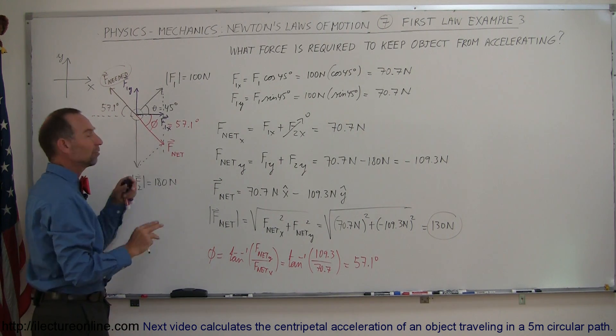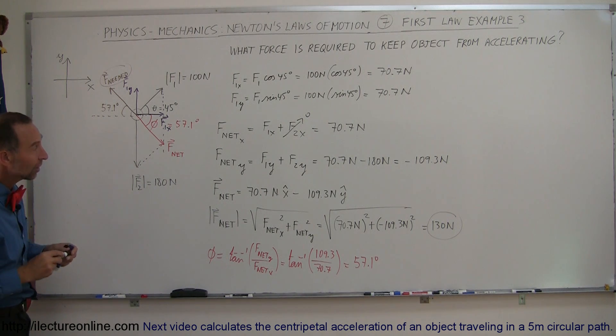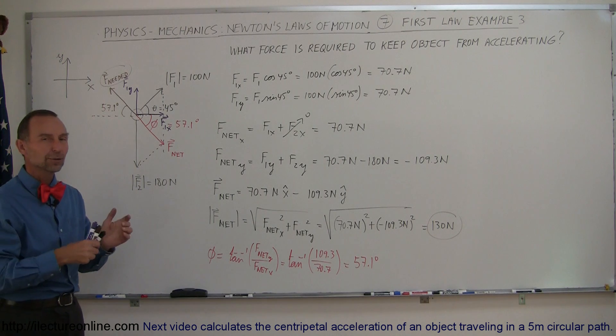If it's 57.1 degrees above the negative x-axis with a magnitude of 130 Newtons, that force will cancel out this force, and the object would not accelerate. There's another example of how we use the laws of Newton to accomplish that.